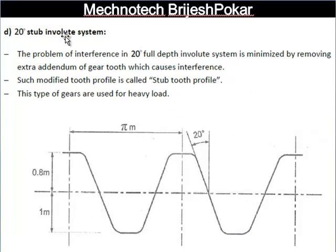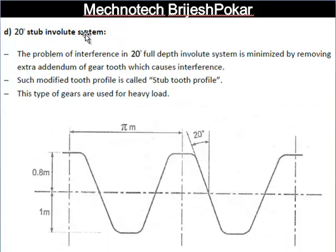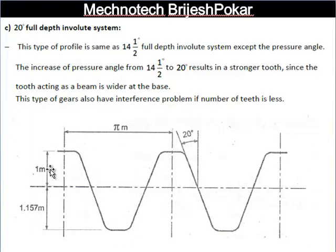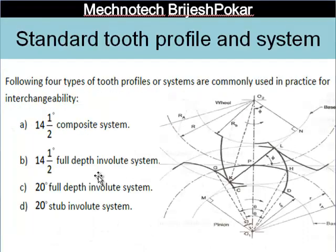The fourth type is the 20 degree stub involute system. In this system, the addendum is reduced from one module (as in the 20 degree full depth system) to 0.8 module. By reducing the addendum, the interference problem can be removed. This modified tooth profile is called the stub tooth profile and such gears are used for heavy loads.